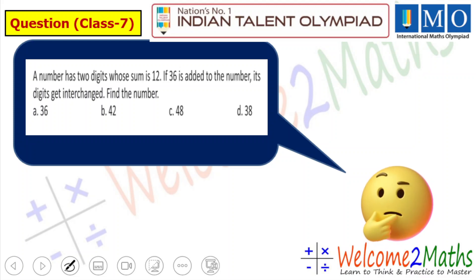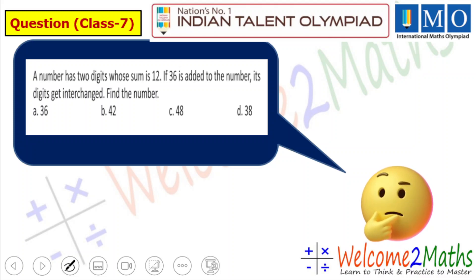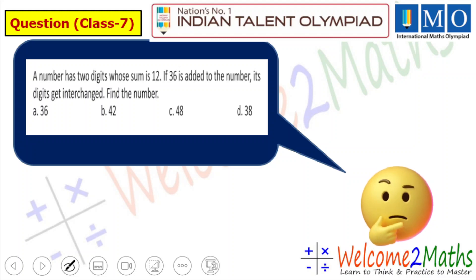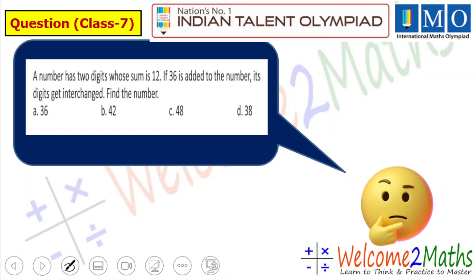Now let us check the answer. The question is: a number has 2 digits whose sum is 12. Whenever you have so many options, you can solve option-based questions very fast and easily. Here you can see the options are 36, 42, 48, and 38.